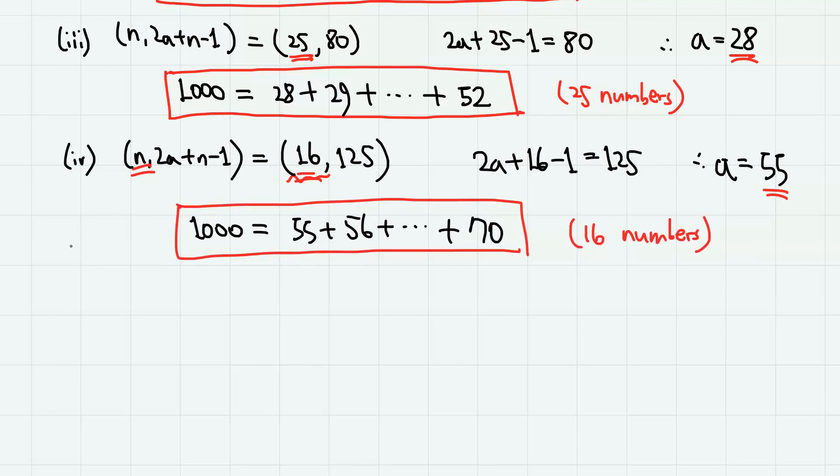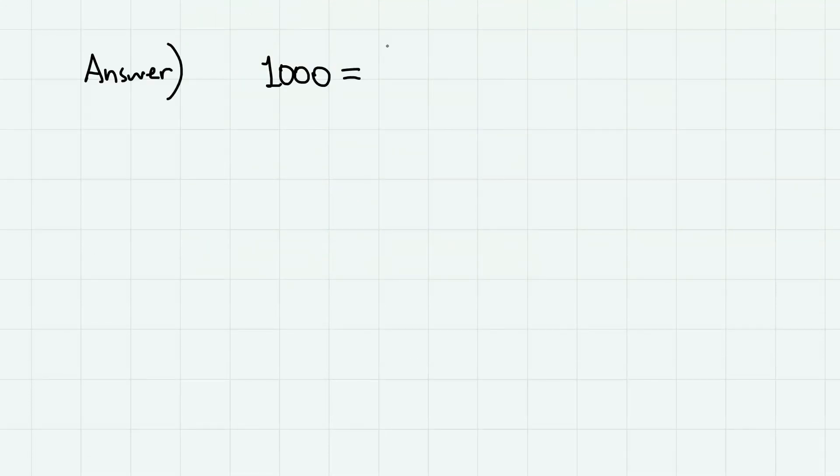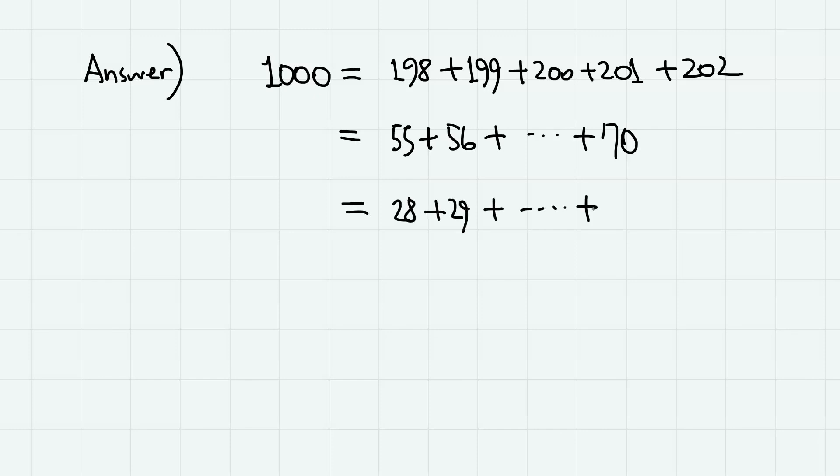To summarize, the possible sets of consecutive natural numbers are: first, 198 plus 199 plus 200 plus 201 plus 202; 55 plus 56 plus up to 70; and 28 plus 29 plus up to 52. So we have three possible expressions.